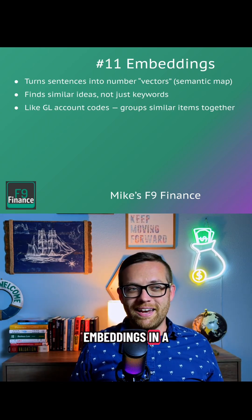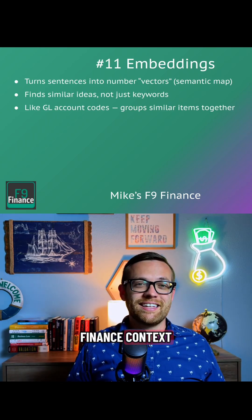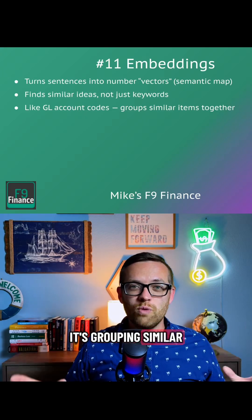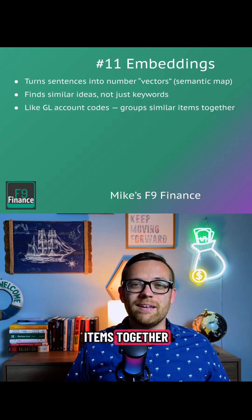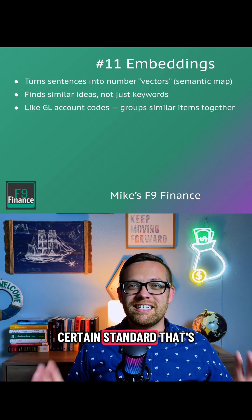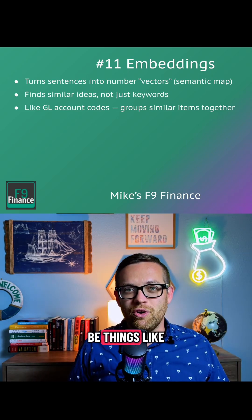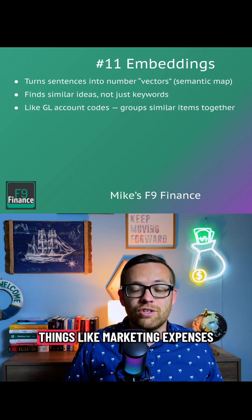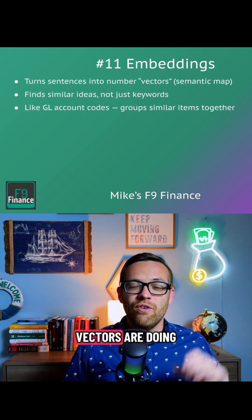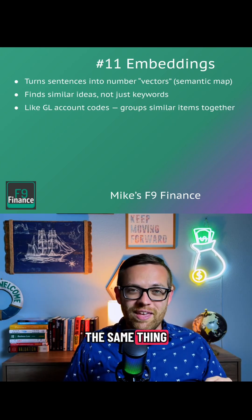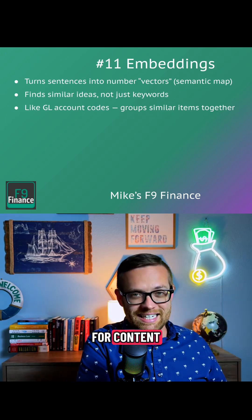The best way to think about embeddings in a finance context is to think about it like general ledger account codes. It's grouping similar items together based on a certain standard that's been assigned to it — things like office supplies, or things like marketing expenses. Vectors are doing the same thing for content.